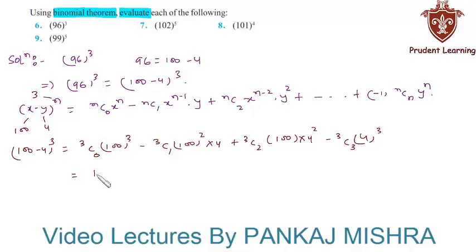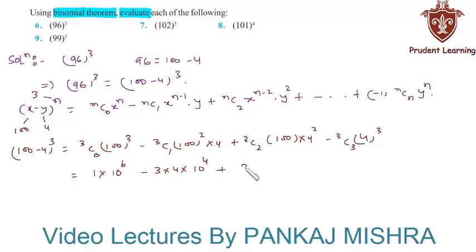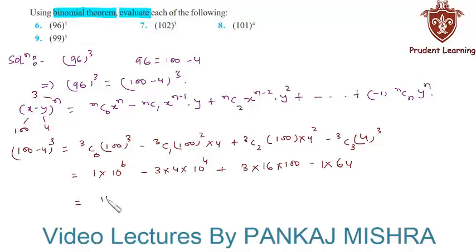This is equal to: 3C0 is 1, into 100³ which is 10⁶, minus 3C1 is 3, into 4, into 100² which is 10⁴, plus 3C2 is 3, into 4² which is 16, into 100, minus 3C3 is 1, into 4³ which is 64. This gives us 10⁶, which equals 10 lakh, that is 1 followed by 6 zeros.